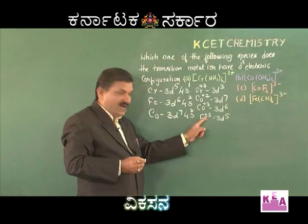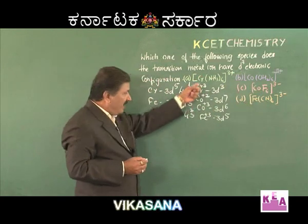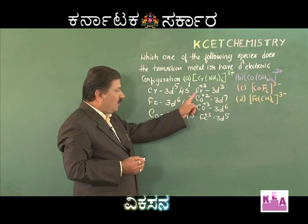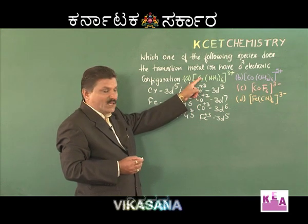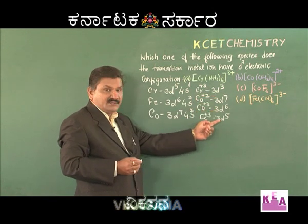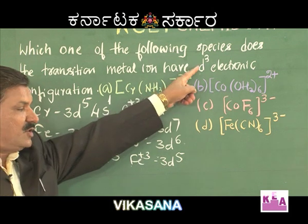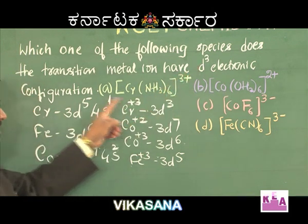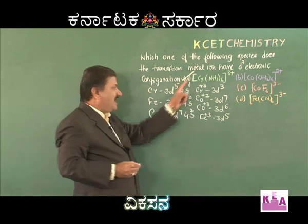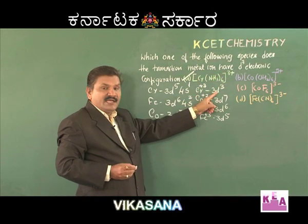Now we have the electronic configurations of the central metal ions in these complexes. Chromium³⁺ has the 3d³ configuration, while the rest have 3d⁷, 3d⁶, and 3d⁵. We need the d³ electronic configuration, and we have it in the chromium complex. Therefore, the correct answer is option A, Cr(NH₃)₆³⁺, where chromium has the 3d³ electronic configuration.